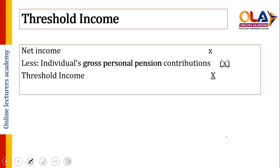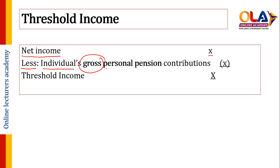Now, what is the definition of threshold income? In order to find out threshold income, first you have to calculate the individual's net income. Then you have to deduct just one thing, and that is the individual's gross personal pension contribution (PPC). Remember the value must be gross — so if a net value has been given you have to gross it up and then deduct.